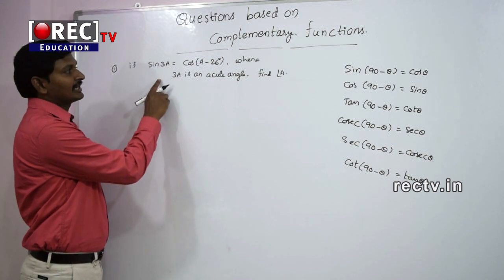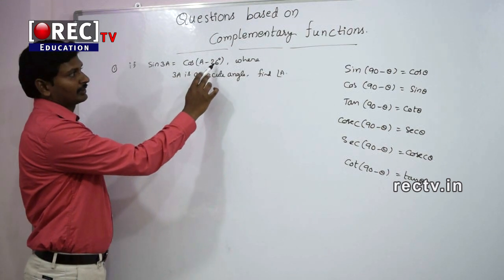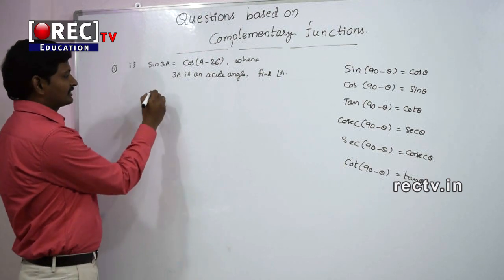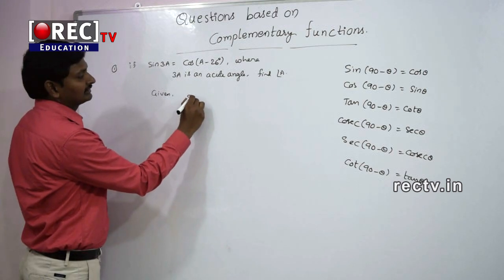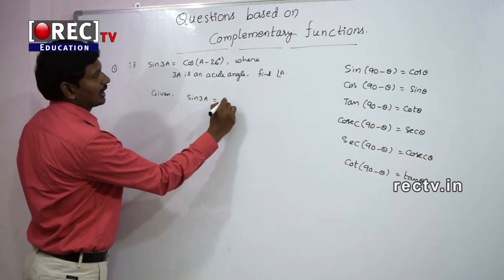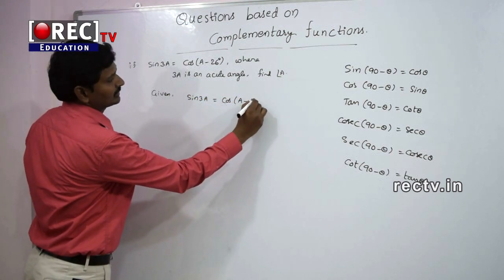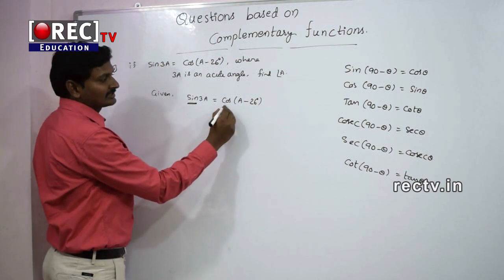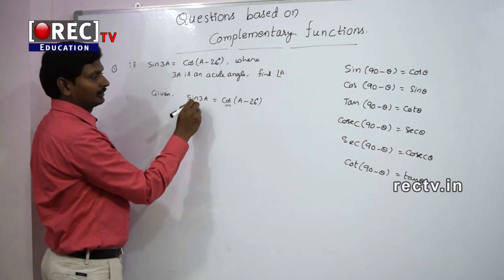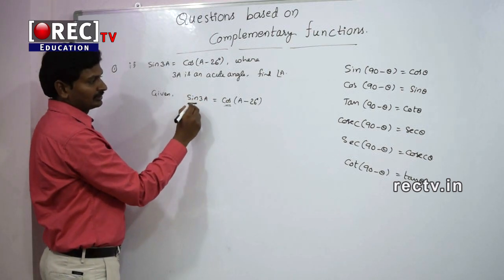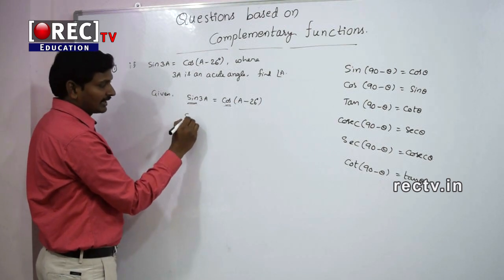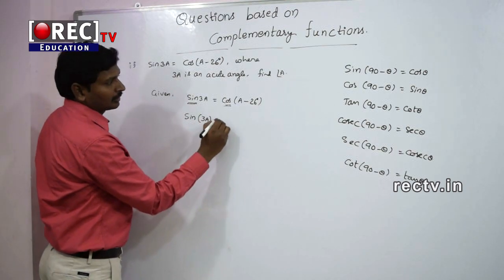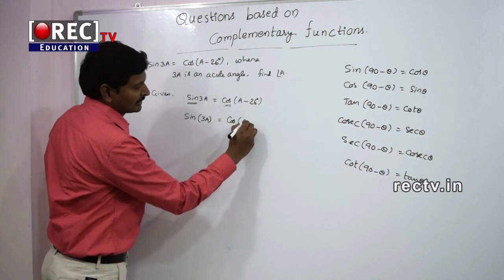First question: if sin(3A) = cos(A - 26°), where 3A is an acute angle, find angle A. Here, the given thing is sin(3A) = cos(A - 26°). We observe that LHS is in sin and RHS is in cos, so we have to convert one into the same function — here we convert sin into cos.